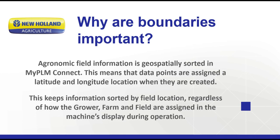Agronomic field information is geospatially sorted in MyPLM Connect. This means that data points are assigned a latitude and longitude location when they are created. This keeps information sorted by field location, regardless of how the grower, farm, and field are assigned in the machine's display during operation.